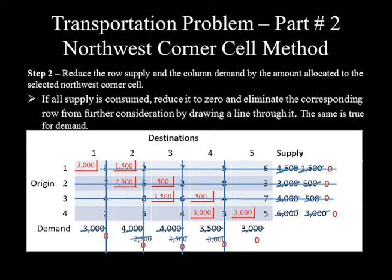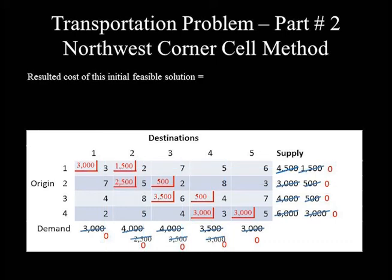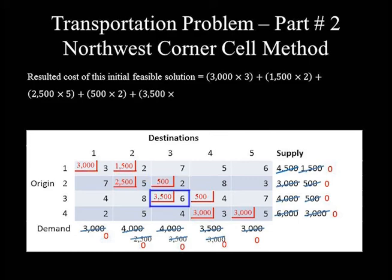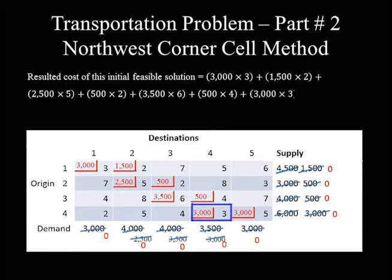This is the initial feasible solution using the Northwest Corner method. The method starts from the northwest corner cell and follows a zigzag pattern to reach the southeast corner cell. The total cost is calculated as: 3,000×3 + 1,500×2 + 2,500×5 + 500×2 + 3,500×6 + 500×4 + 3,000×3 + 3,000×5.